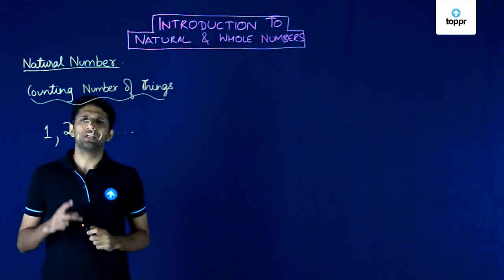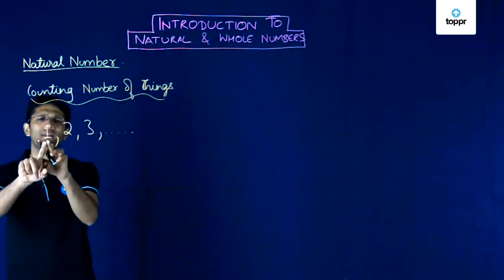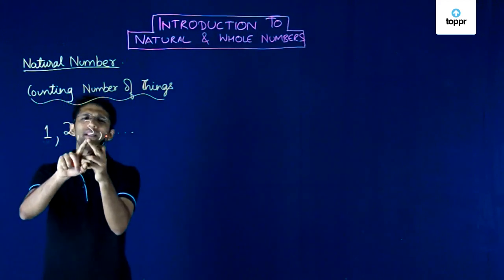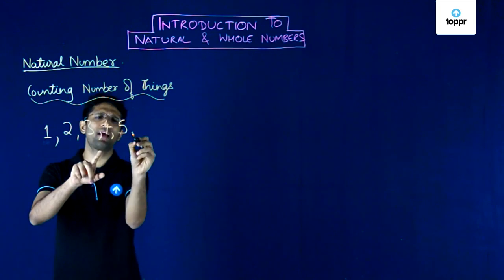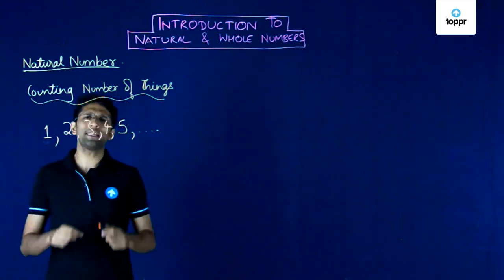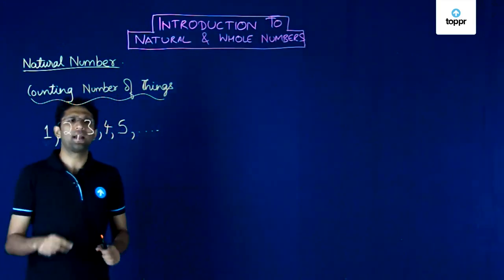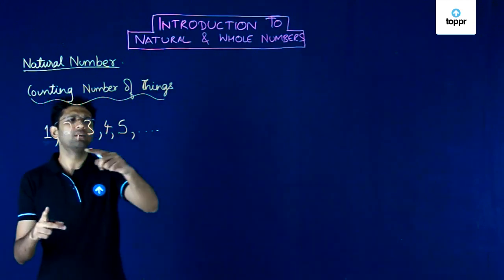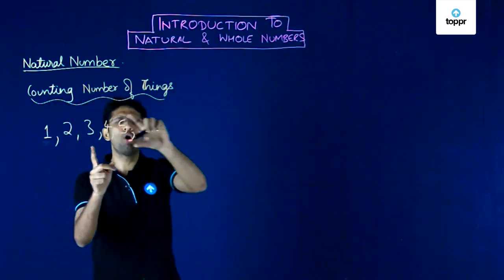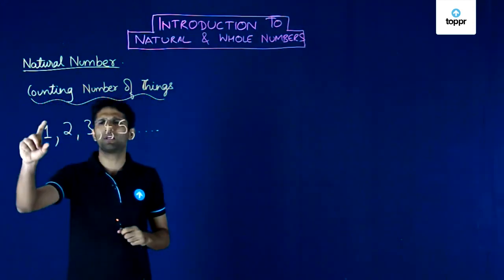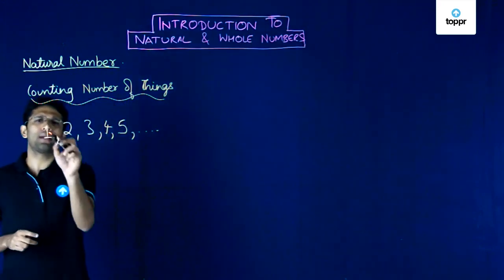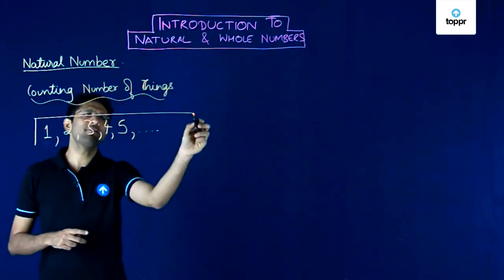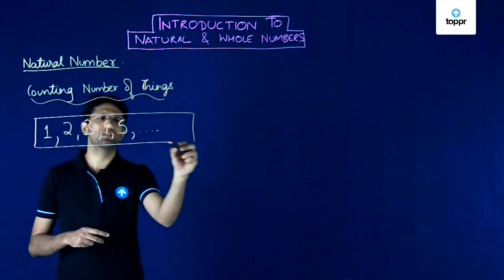All these numbers starting with one, then followed by two, then by three, and naturally the next number will be four, followed by five and so on. So all these numbers starting from one and extending endlessly — this list will go on and on forever — and so all these numbers 1, 2, 3, 4, 5 starting from one and going on without ending are called natural numbers.